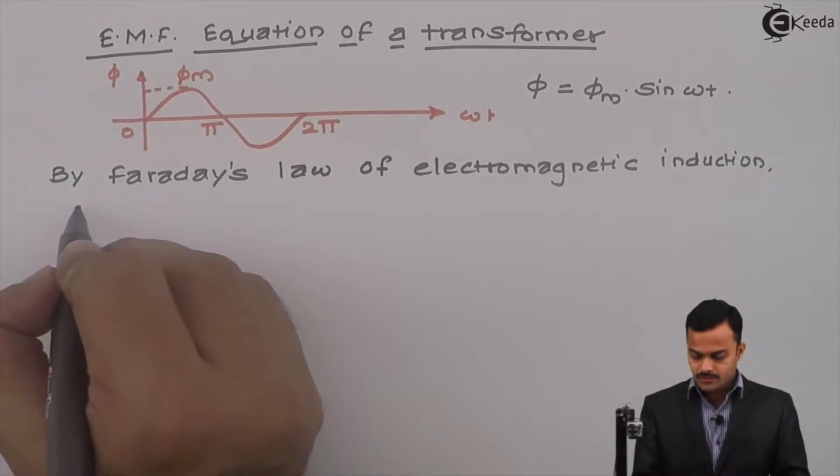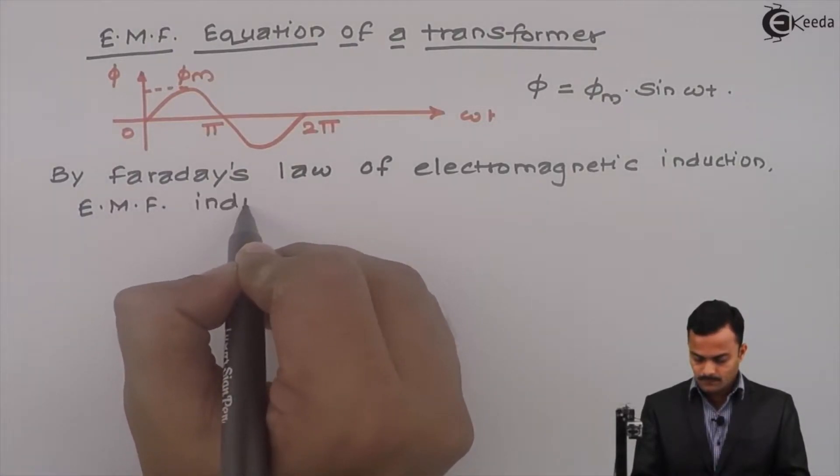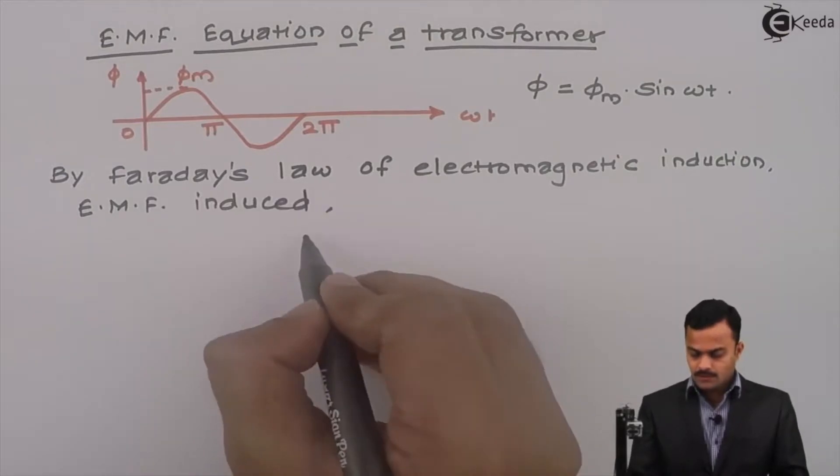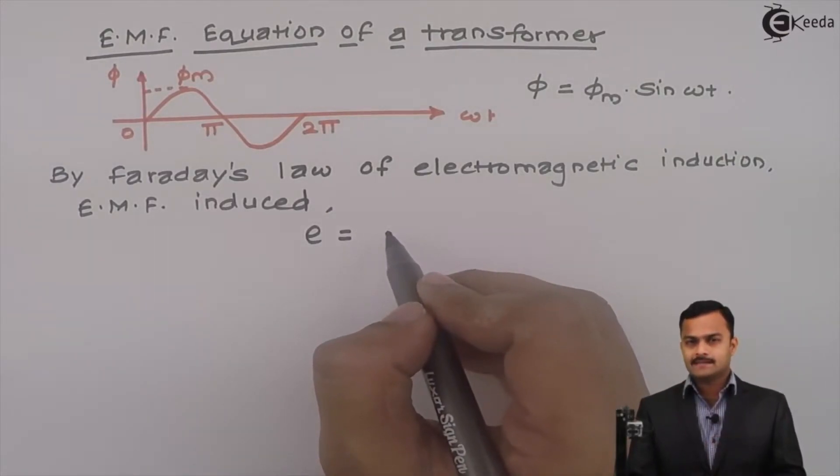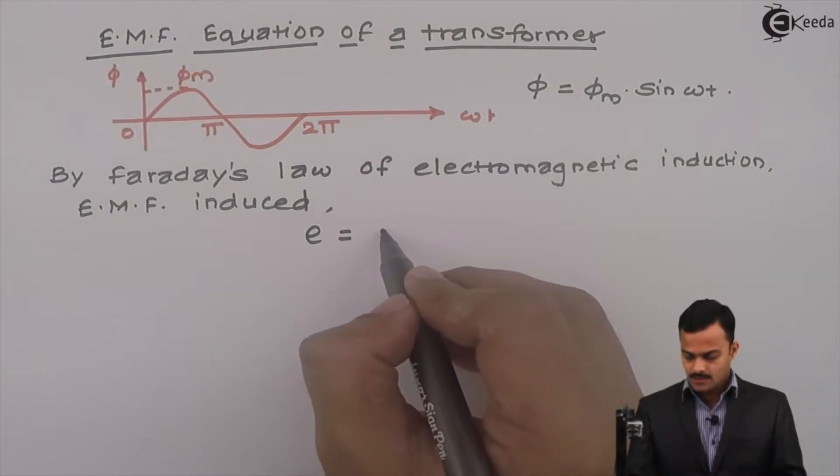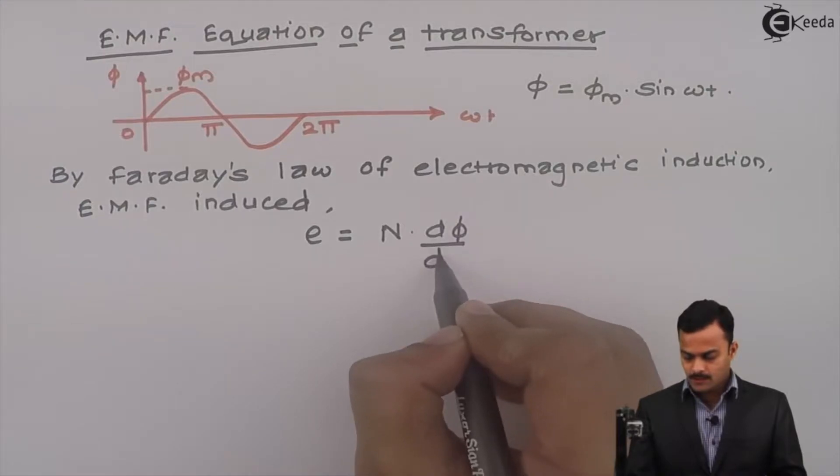EMF induced E equal to, if I am considering windings have n number of turns, n d phi by dt. But hold on, this is just a magnitude of E. What about the direction?